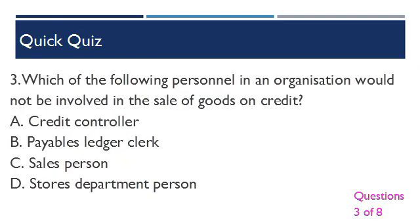Question 3: Which of the following personnel in an organization would not be involved in the sale of goods on credit? A. Credit controller. B. Payables ledger clerk. C. Sales person. D. Stores department person.